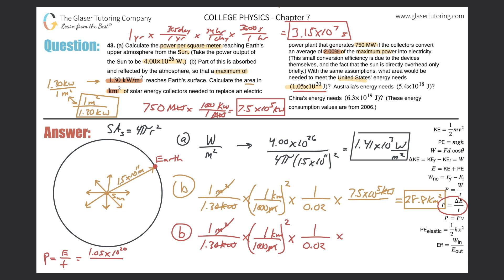That's the value I'm going to plug in — 3.15 times 10 to the 7 seconds. So the power is 1.05 times 10 to the 20 divided by 3.15 times 10 to the 7. This equals 3.33 times 10 raised to the 12th watts. But I need kilowatts to cancel the unit, so dividing by 1,000 gives 3.33 times 10 to the 9 kilowatts.